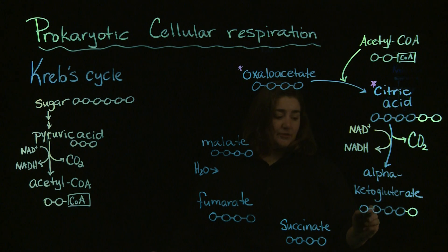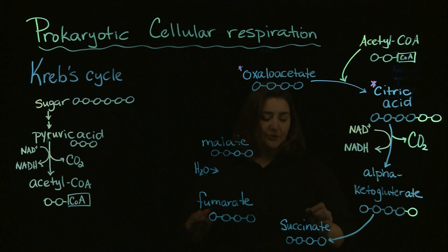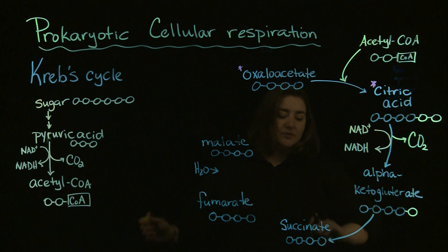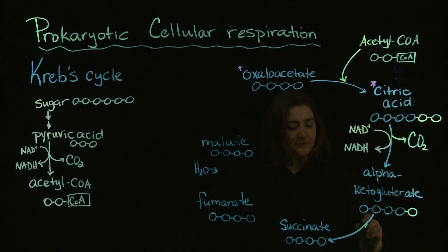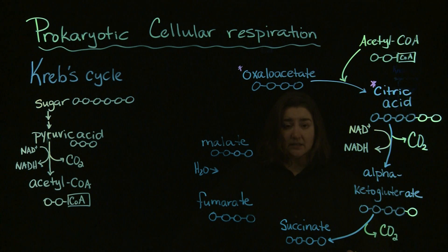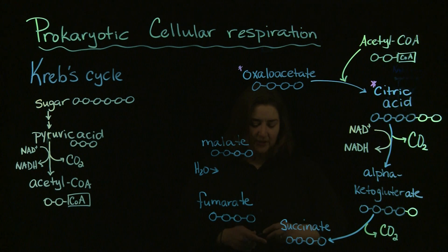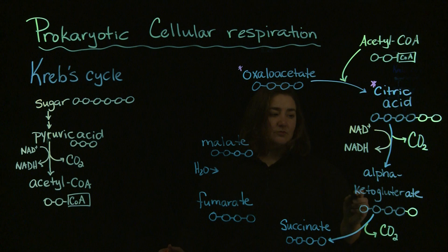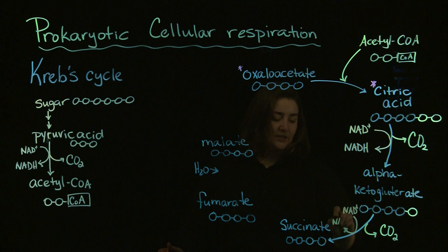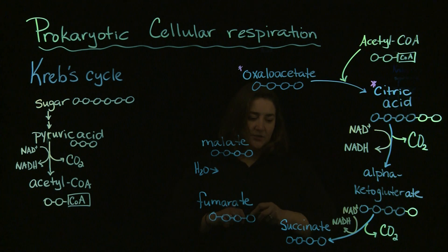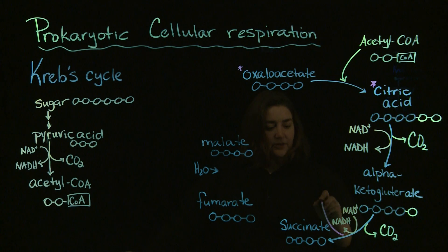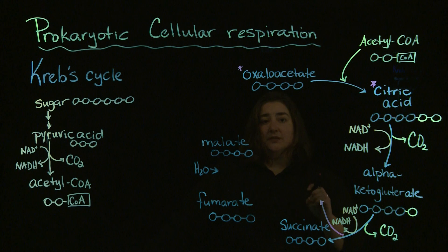The alpha-ketoglutarate is then converted by a series of enzymatic steps to succinate. We're going to lop off that other carbon, so this is where we generate some more carbon dioxide associated with cellular respiration. We are also going to generate more electrons for the electron transport chain in terms of NAD being converted to NADH. Out of the Krebs cycle, we again get a little bit of ATP that's made.